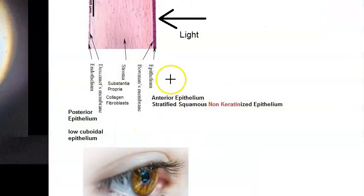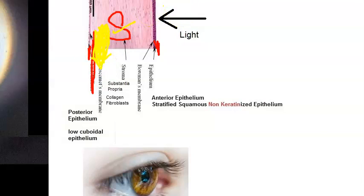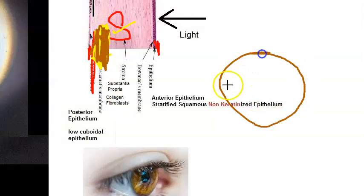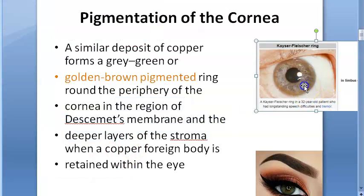The corneal layers are: epithelium, endothelium, and stroma in the middle, with Descemet's membrane located between the stroma and endothelium. The copper deposit is in Descemet's membrane and the deeper layers of the stroma, around the limbus of the cornea — forming the golden brown Kaiser-Fleischer ring.